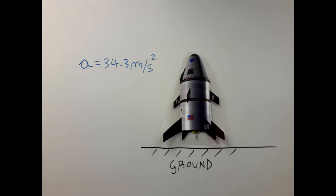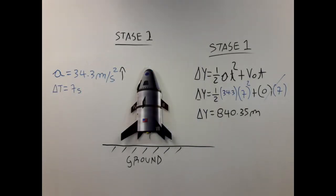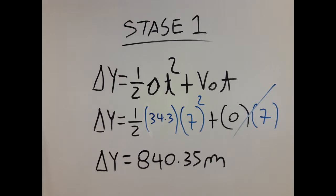The rocket, as you can see, is on the ground and it starts with an acceleration of 34.3 meters per second squared. We know the acceleration and we also know the time that acceleration took place. So I am going to plug in the acceleration and the time into the kinematic equation for stage 1, and I am going to get the delta y for the first stage.